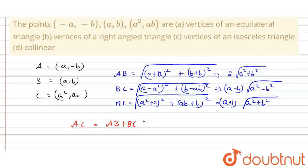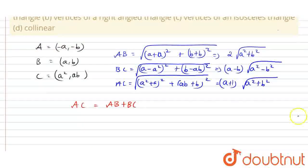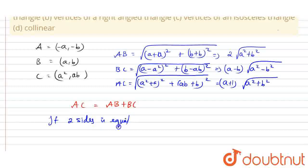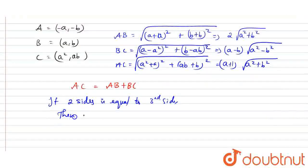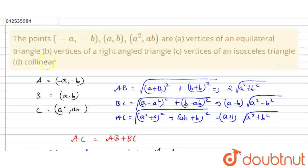If we add AB and BC, we get the AC value. If two sides are equal to the third side, then that condition means the points are collinear. So it is collinear, and option D is the correct answer. Okay students, thank you.